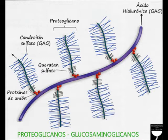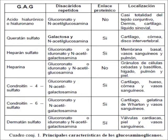La unión se hace a través de un residuo de serina localizado en la secuencia tetrapeptídica serina-glicina-X-glicina, salvo el queratán sulfato, que se une a través de la asparragina, siendo el único con enlace N-glucosídico. La unión se hace a través de la secuencia glucídica de puente trisacárido de galactosa-galactosa-xilosa, excepto en el queratán sulfato, que se une directamente a la asparragina sin el puente trisacárido, y el ácido hialurónico.